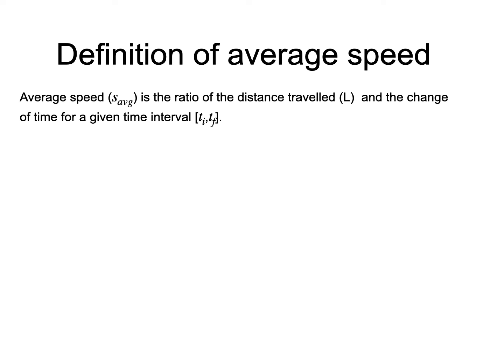This definition can be summarized with this mathematical expression. The average speed is a positive scalar because this expression is the ratio of two positive scalars.